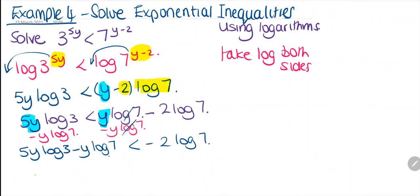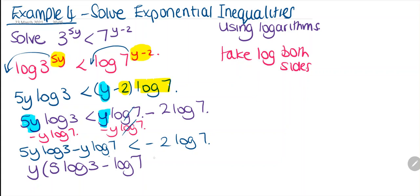We want to solve for y, so we can factor by y. Bringing y outside we get y(5 log 3 minus log 7), and this is less than minus 2 log 7.